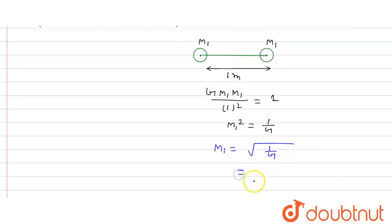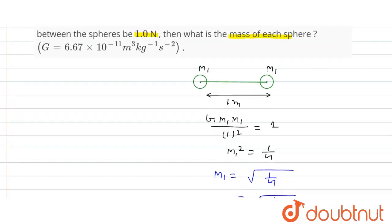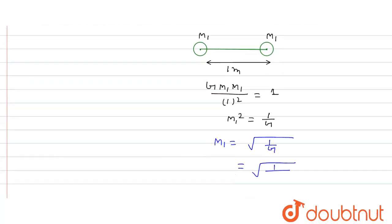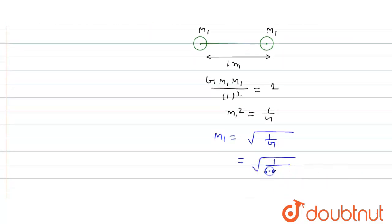So this will be how much? Under root of 1 upon G value is how much? This will be 6.67 × 10^-11. So from here, m1 mass, m1 value will be how much? 1.2 × 10^5 kg.